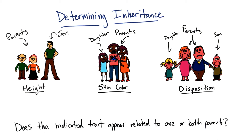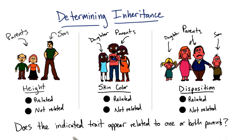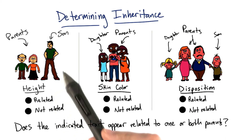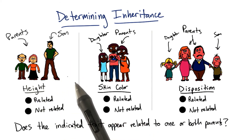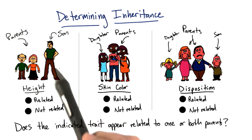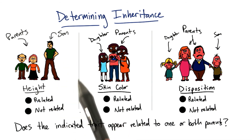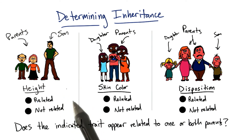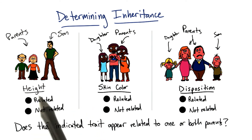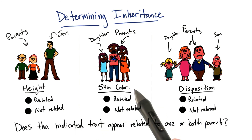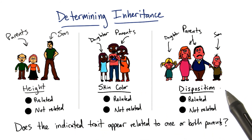What I want you to tell me is: does the indicated trait appear related to one or both of the parents at all? For example, in the case of height, I want you to compare the son to the parents and see if it appears that in some form or fashion — whether it's a combination of the parents or one of the parents sharing this trait — the son appears related with regards to height. The same thing applies in the scenario for skin color, and the same in the scenario for disposition. Go ahead and tell me which answer you think is best for each case.